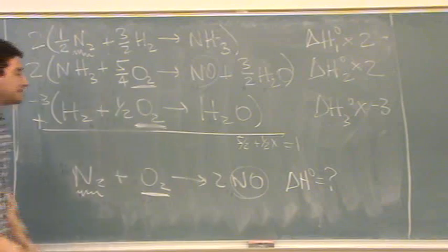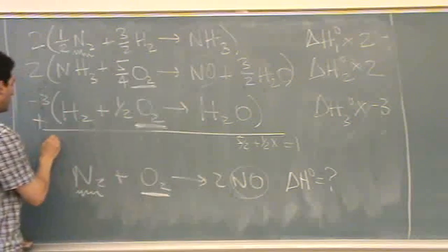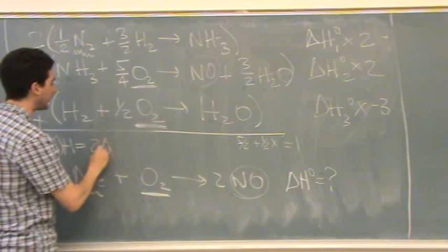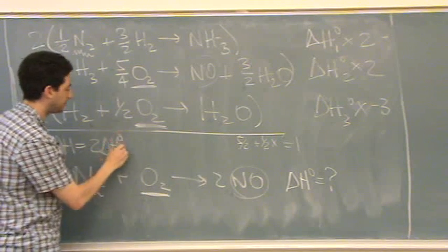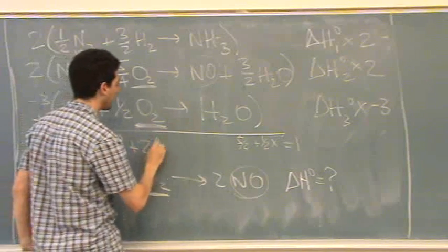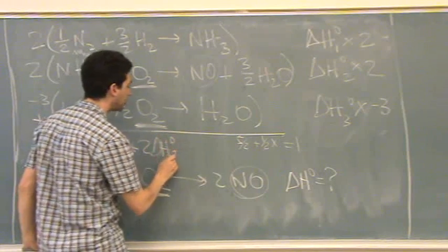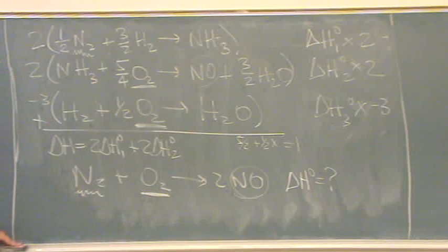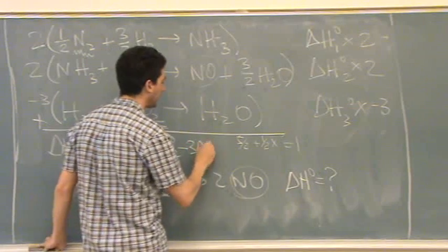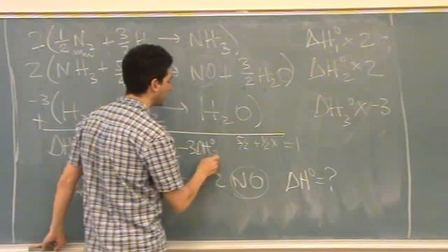Done. The answer is, delta H is equal to 2 times delta H for reaction 1, whatever that number is. It doesn't matter. Plus 2 times delta H for reaction 2, whatever that number is. Plus, or really minus 3 times delta H for reaction 3.